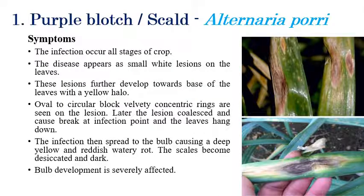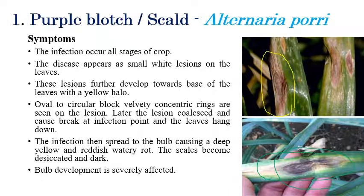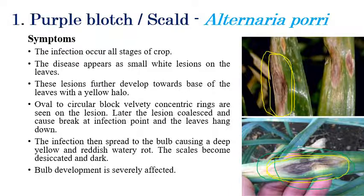The first disease is Purple Blotch or Scald, caused by Alternaria porri. Symptoms appear on leaves and foliage and can be seen at almost all crop growth stages. Initially, small white color lesions with a yellow halo can be seen. In later stages, concentric rings develop — the formation of concentric rings is a characteristic feature of Alternaria. These lesions slowly convert into black or brown color.